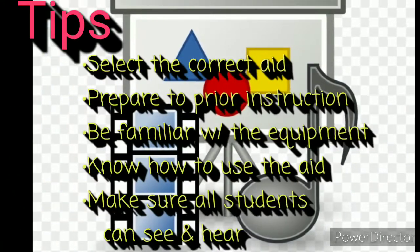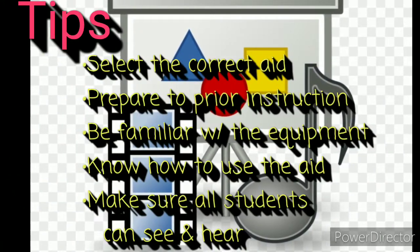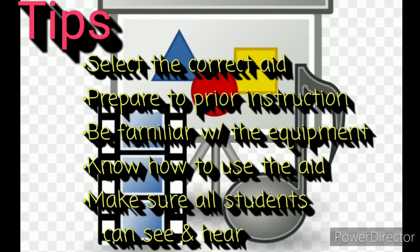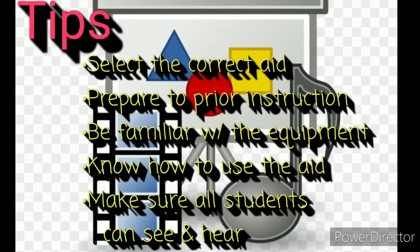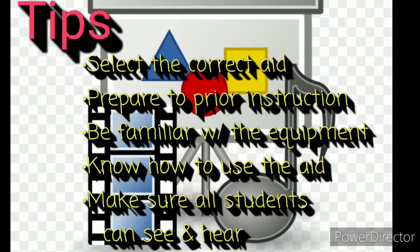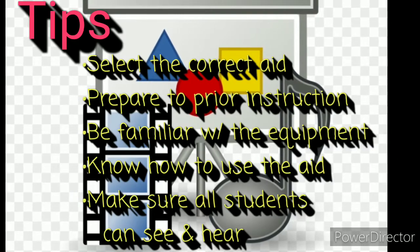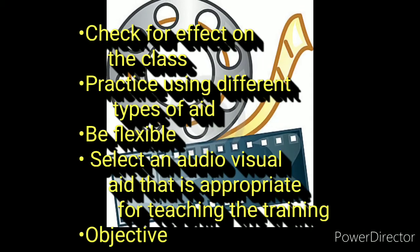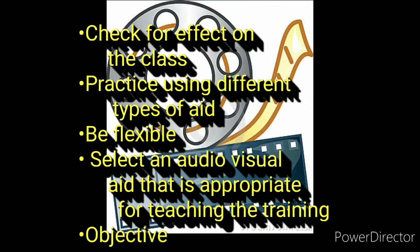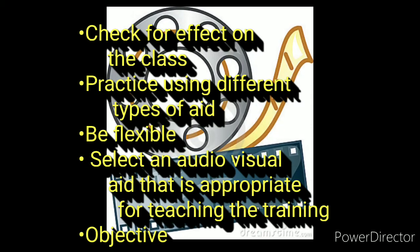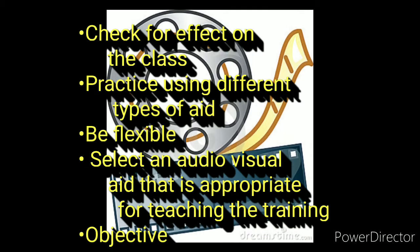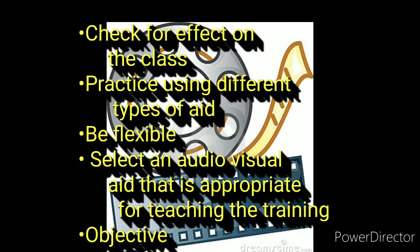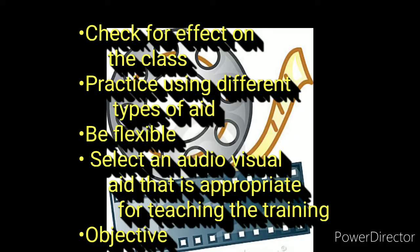These are the tips for audiovisual aids: first, select the correct aid; prepare prior to instruction; be familiar with the equipment; know how to use the aid; make sure all students can see and hear the aid; check for effect on the class; practice using different types of aids; be flexible; and select an audiovisual aid that is appropriate for teaching the lesson. The last one is the object aid.